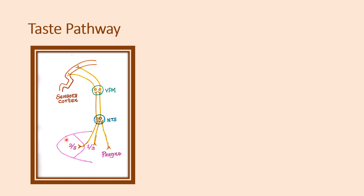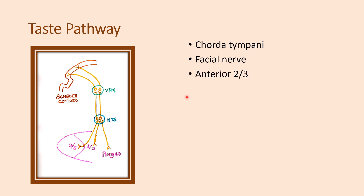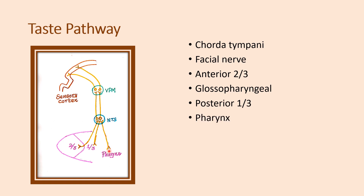Taste sensation from the anterior two-thirds of the tongue is carried by the chorda tympani branch of the facial nerve. The posterior one-third of the tongue taste sensation from the taste buds is carried by the glossopharyngeal nerve. From the pharynx, the taste sensation is carried by the vagus nerve.